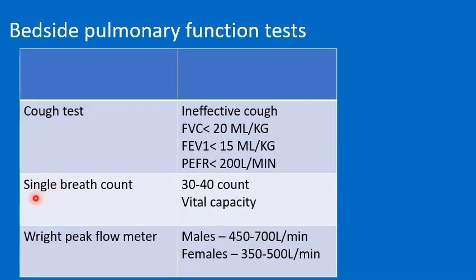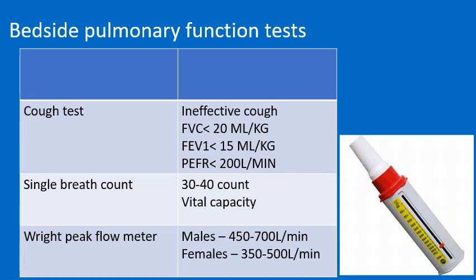The single breath count indicates vital capacity: the patient takes a deep breath and counts numbers as far as possible without taking a breath. Normal is a count of 30 to 40. The Wright's peak flow meter is a handy bedside instrument used to measure peak expiratory flow rate. Normal peak expiratory flow rate is 450 to 700 liters per minute in adult males and 350 to 500 liters per minute in adult females.